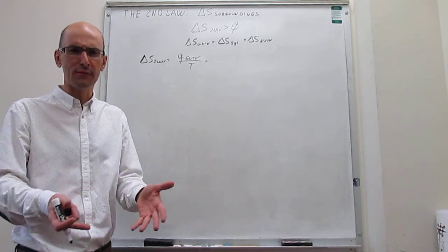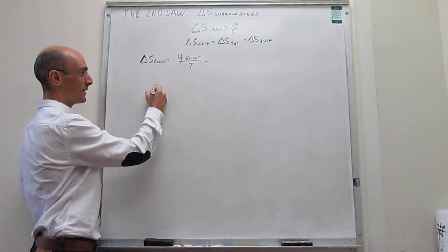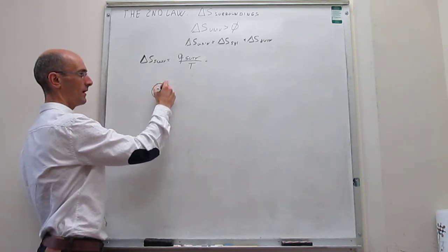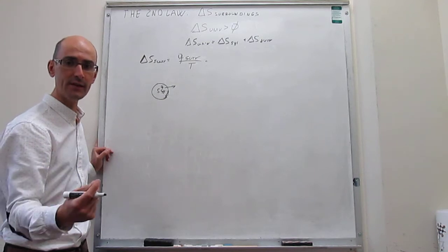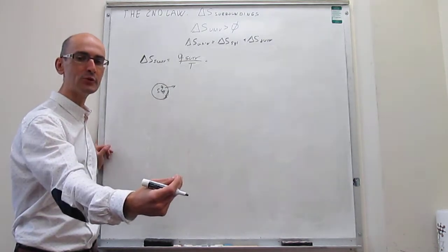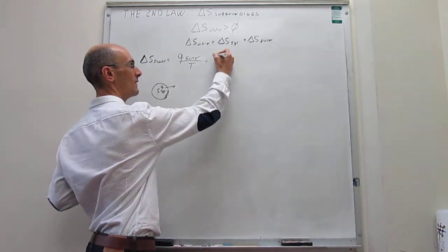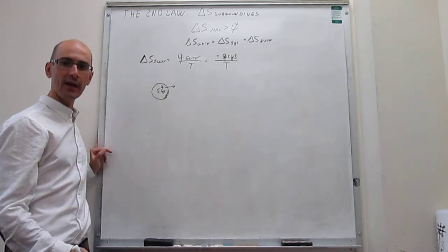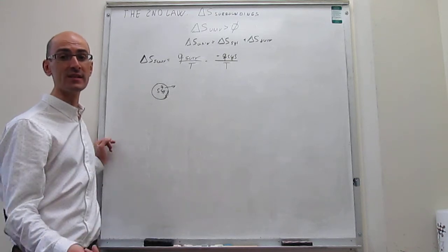We don't know how to calculate the surroundings directly, but if the surroundings are connected to the system, then that should be easy. And it turns out they are. If this is your system and the rest of the universe is the surroundings, there is a direct relationship: if the heat is positive in the system, say plus one joule, then that one joule is absorbed by the surroundings. Any energy exchanged between system and surroundings has the same magnitude but opposite sign.